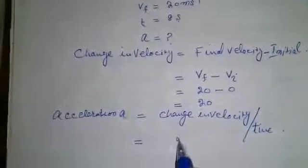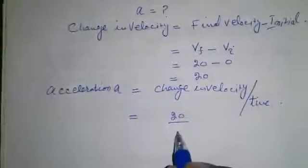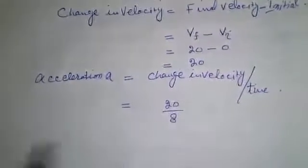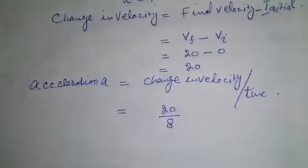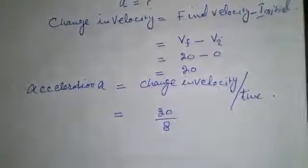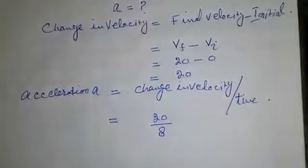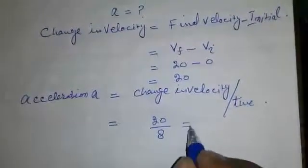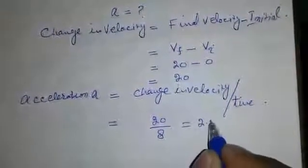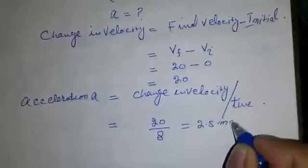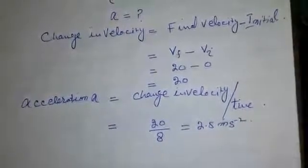Which is equal to 20 over 8, 20 divided by 8, which equals 2.5 meters per second per second.